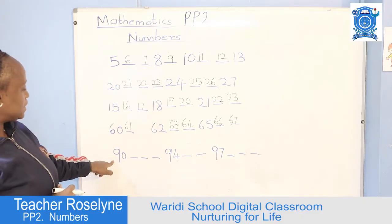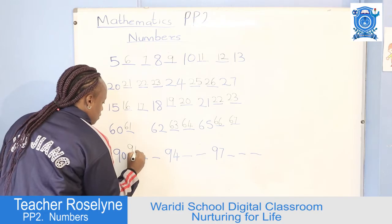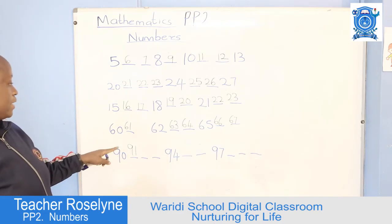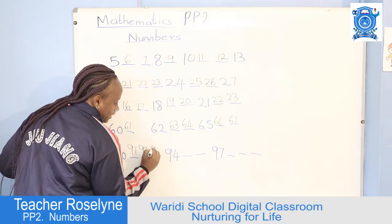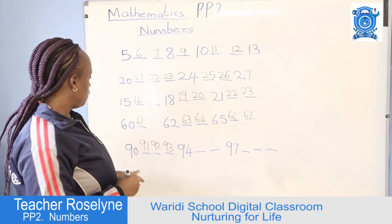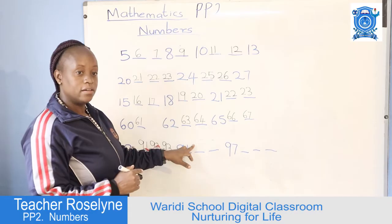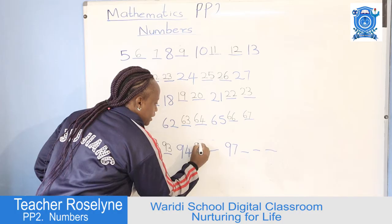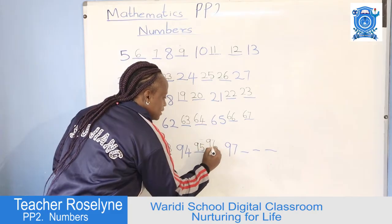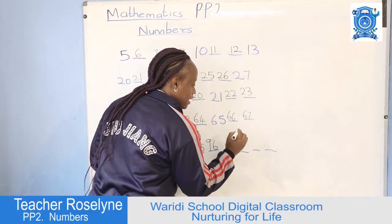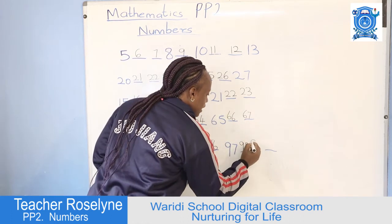Now let's see here — we have started with number 90, that is 9 and 0. From 90 we go to which number? 91 — it is 9 and 1. From 91 it's 92 — 9 and 2. From 92 we have number 93 — 9 and 3. Now we are on the last line: 90, 91, 92, 93, 94, 95. Here we are writing 95 — it is 9 and 5. From 95 it is 96 — 9 and 6. Then 97, 98 — that's 9 and 8. From 98 it's 99 — 9 and 9.